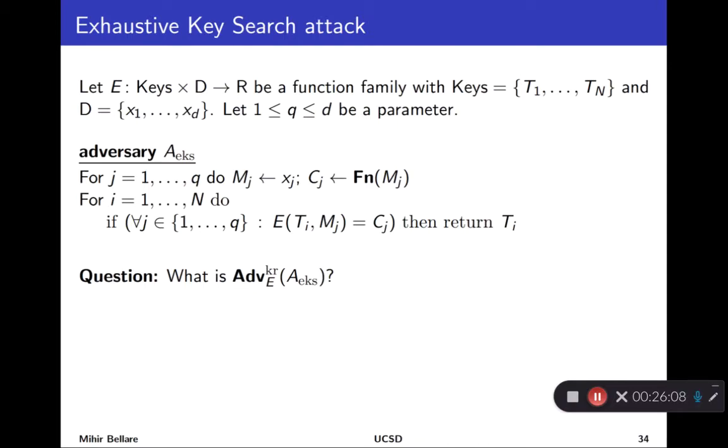Well, that's where this input-output examples come in. So, let's look at the adversary. It's subscripted EKS to denote as the exhaustive key search adversary. What does it do? It first goes to its FN procedure or oracle and calls it on some messages and gets back the corresponding ciphertexts. It does this Q times for Q different messages, and it's for concreteness just the first Q inputs from the input set. You should think of this number Q as being small. The starting example would be just one, just one example, but maybe two or three, but not a ton.